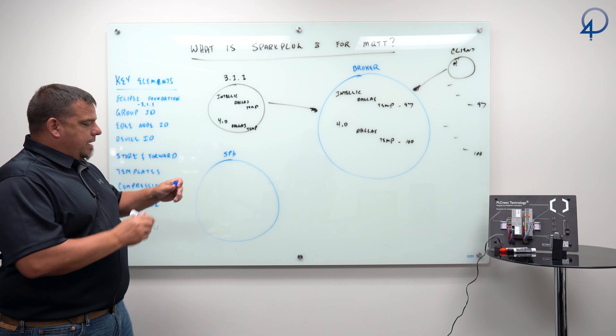So what does Spark Plug B do? I'm going to create a Spark Plug B client. The difference between an MQTT 3.1.1 client and an MQTT Spark Plug B client is that the Spark Plug B client is also natively an MQTT 3.1.1 client — because Spark Plug B is an extension of 3.1.1. What I'm doing with Spark Plug B is creating an edge-of-network node, which creates a dedicated place in the topic namespace for spark plug B devices.